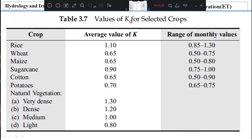Then values of K for selected crops. We have rice, wheat, maize, sugarcane, cotton, potatoes, natural vegetations. There are so many. For all of them, we have the K values.